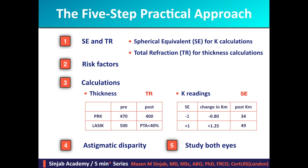In step number two I'm going to show you how to study the risk factors on corneal tomography when you have only the four composite maps and you don't have access to the other maps. In step number three I'll show you how to do the calculations in terms of thickness and K-readings. In step number four we have to study astigmatic disparity, and in step number five we have to study both eyes.